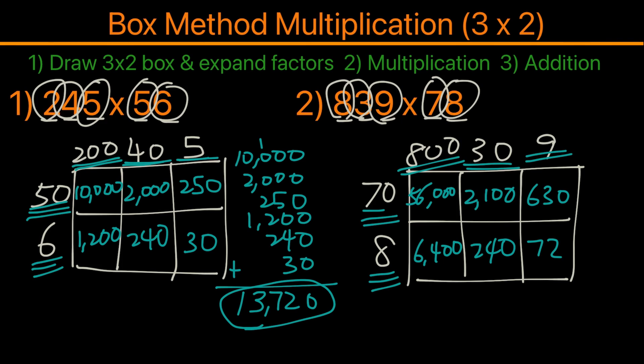Now we have all the numbers ready, we're gonna go ahead and add them together. So we have 56,000 plus 2,100 plus 630 plus 6,400 plus 240 plus 72. We can go ahead and put that in the calculator, and the answer would be 65,442.